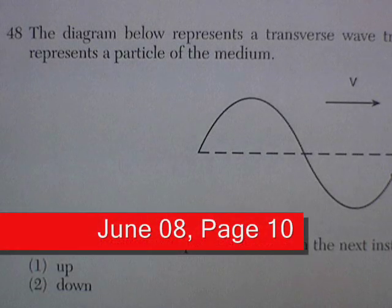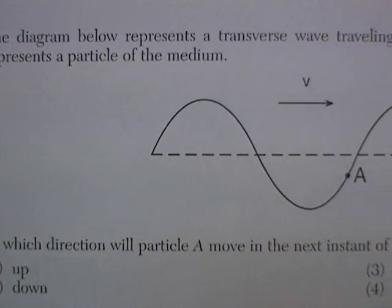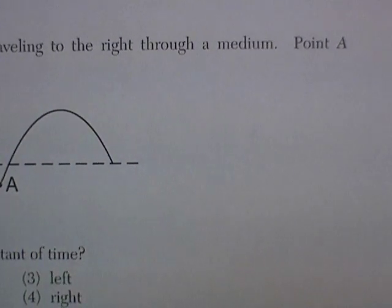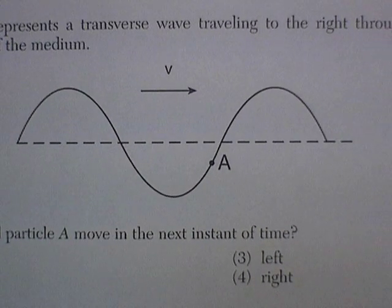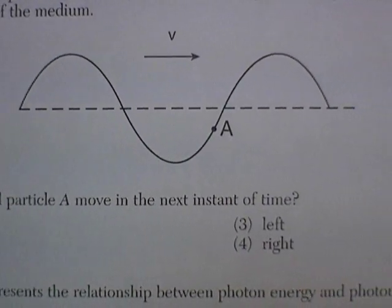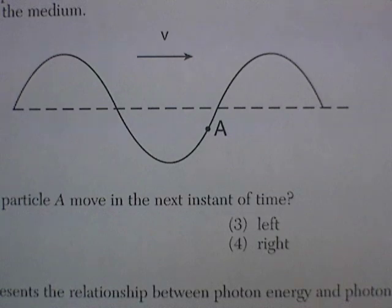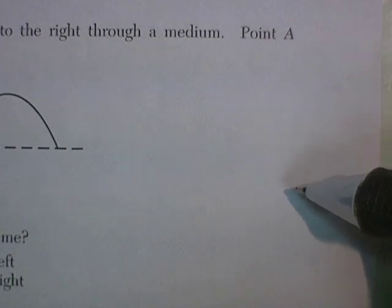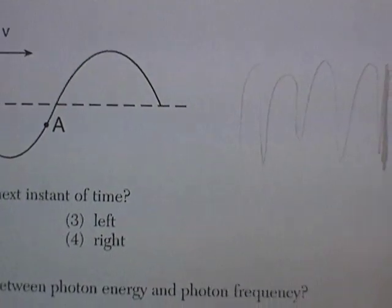The June Audit exam, we're on page 10, Question 48. The diagram below represents a transverse wave traveling to the right through a medium. Point A represents a particle of the medium. In which direction will particle A move in the next instant of time? A lot of people miss these kinds of questions. But if you think about what causes a wave in the first place, it's the medium moving up and down, and as it travels, it produces this wave pattern.